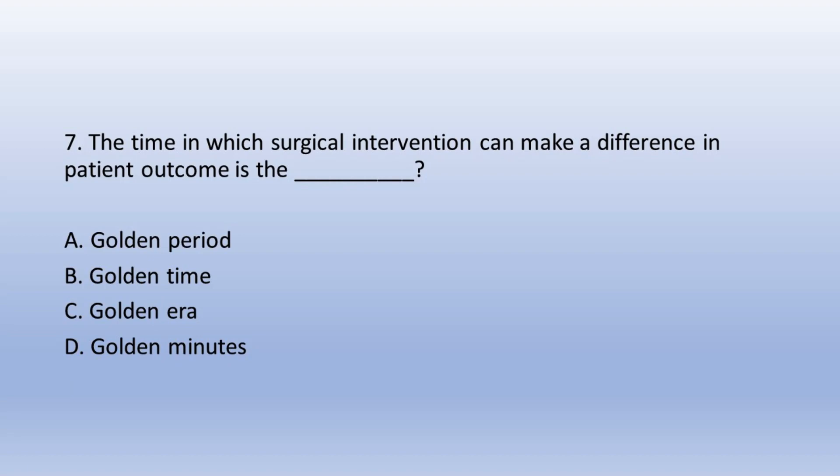Question 7. The time in which surgical intervention can make a difference in patient outcome is the: A. Golden period, B. Golden time, C. Golden era, D. Golden minutes. The answer is A. Golden period.